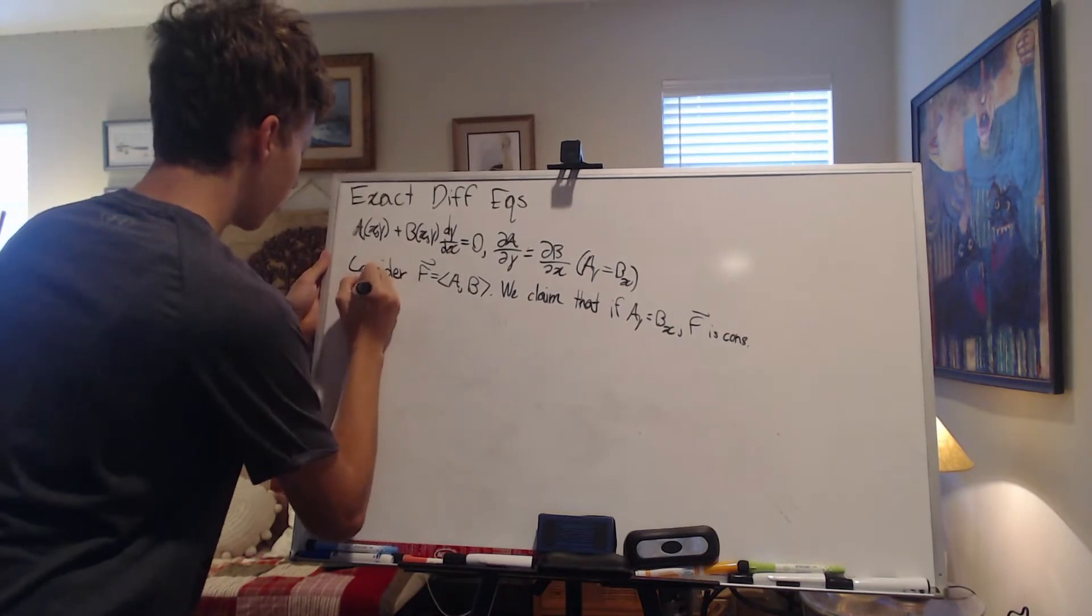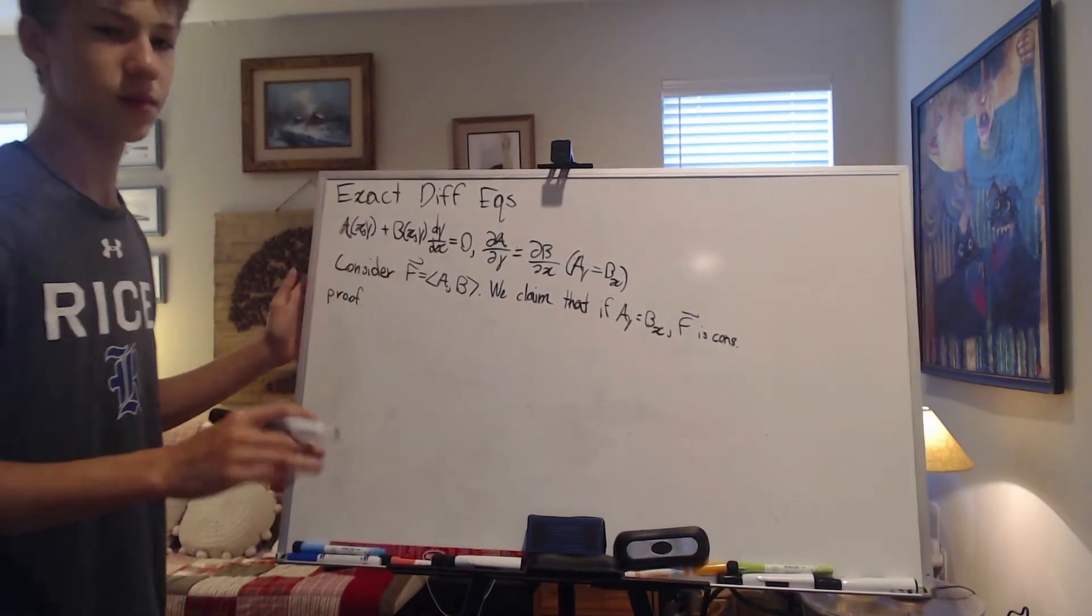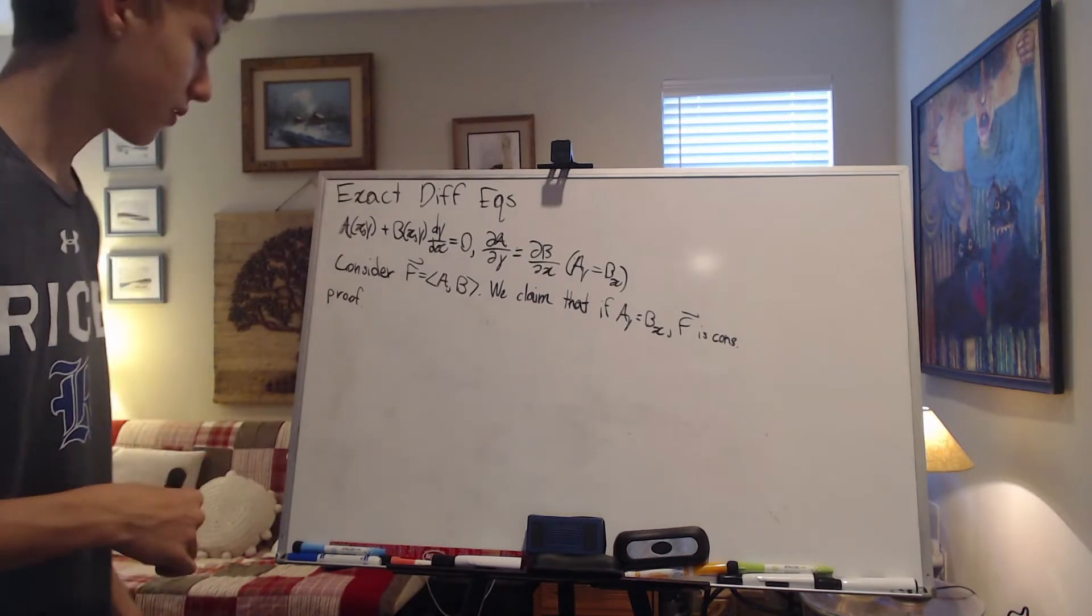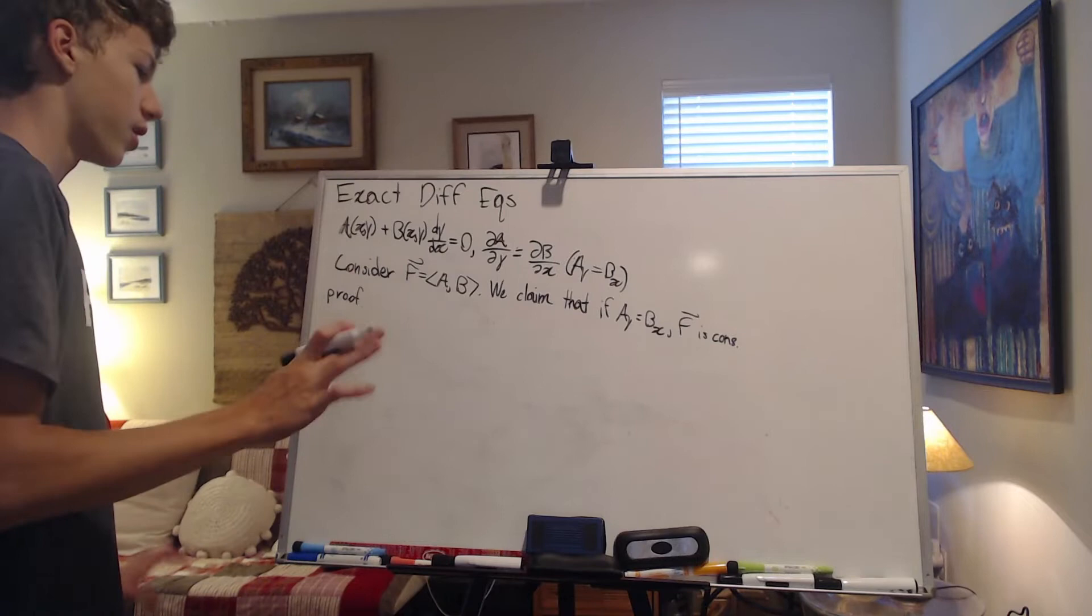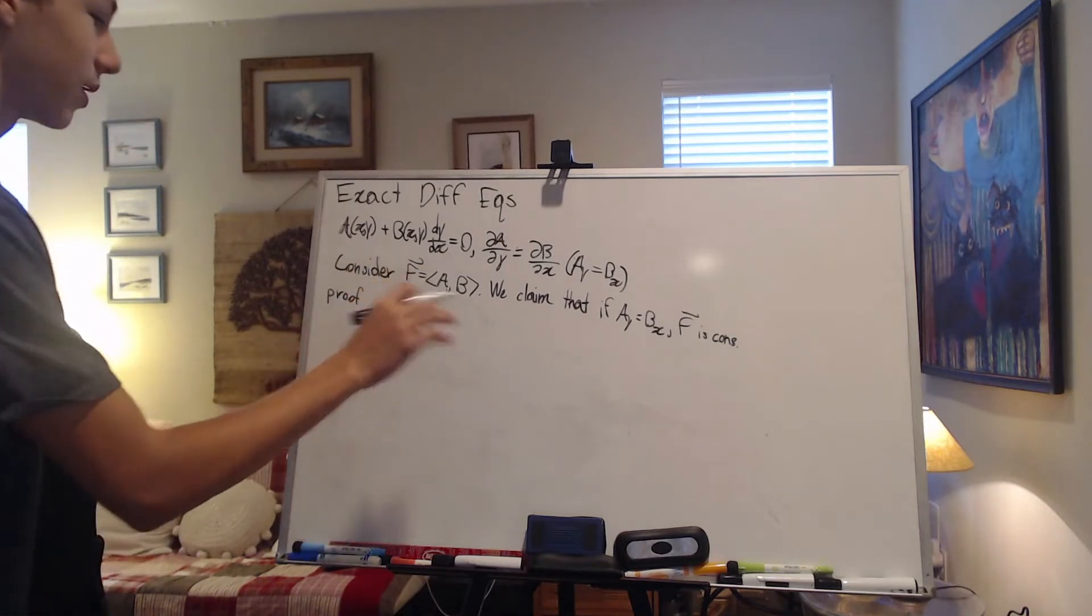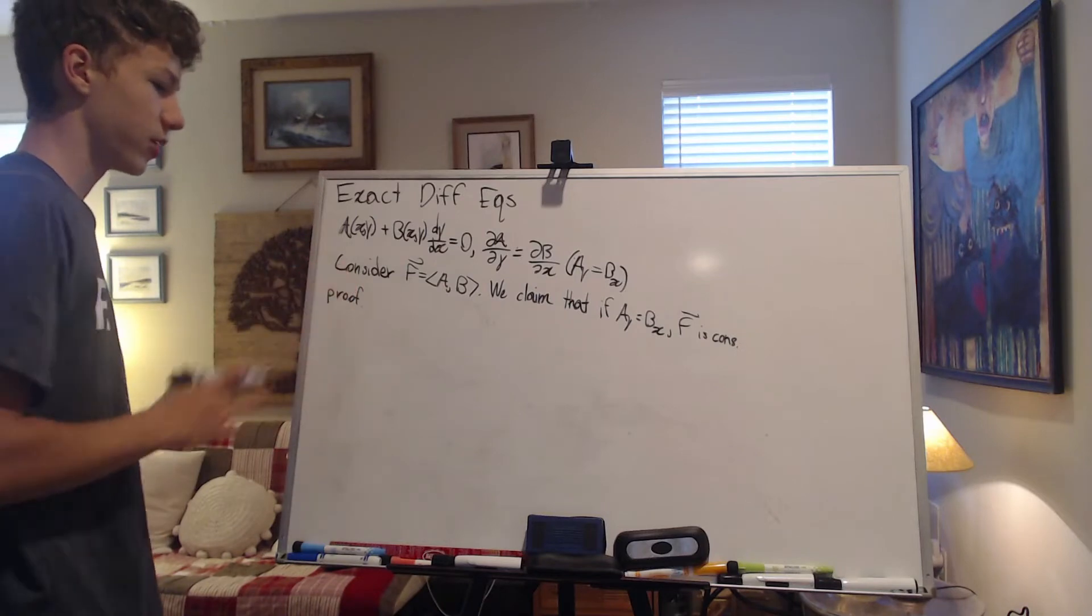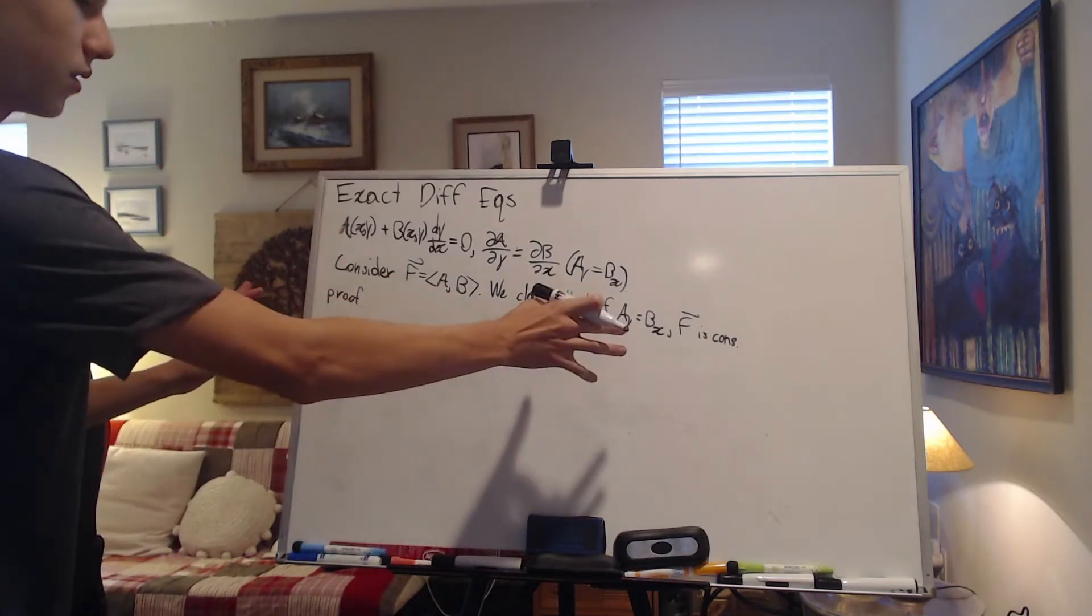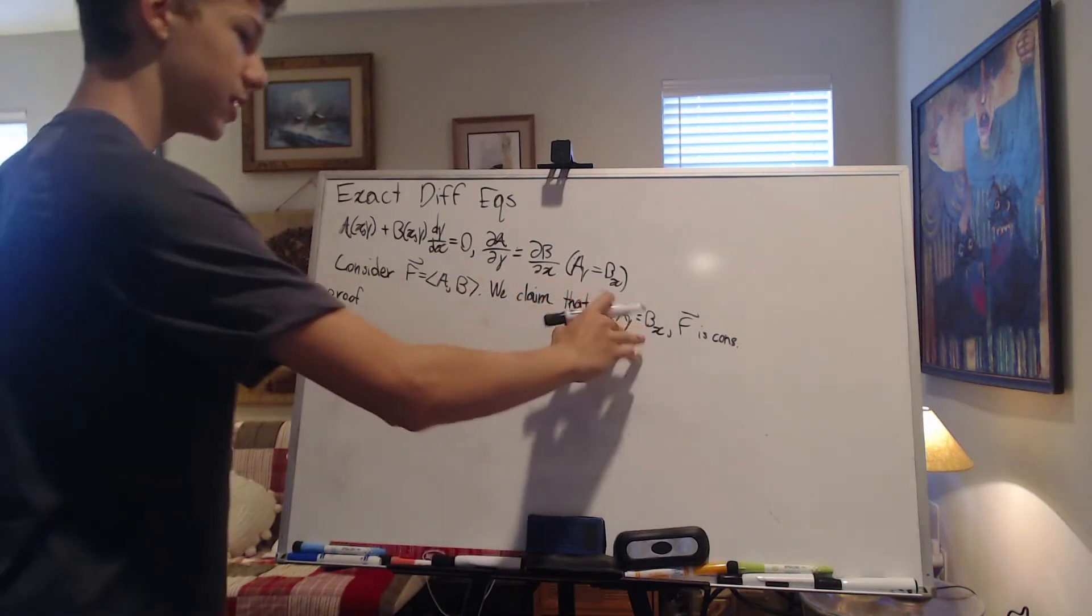Okay, so let's prove that. So we claim that if a_y equals b_x, f is conservative. Okay, let's prove that. That's what we're going to do for this video. I'm planning on splitting up videos into more bite-sized pieces so it's not like a little 30-minute, 20-minute video. Anyway, those are hard to upload, so yeah. I'll do those at times, but right now I think it's better if they're bite-sized. So first, let's get this done, okay?